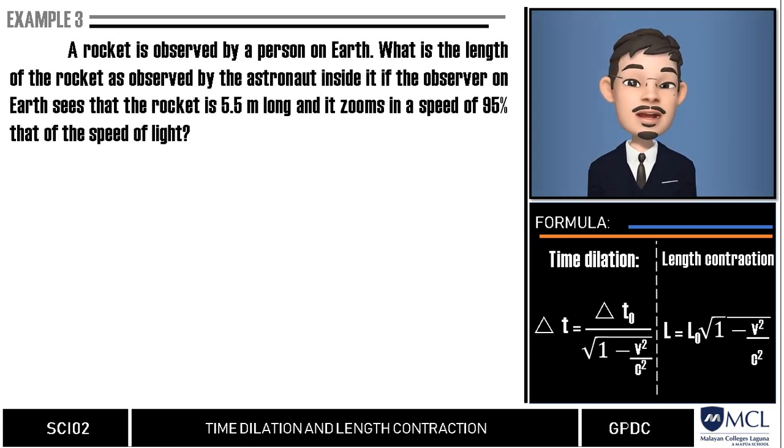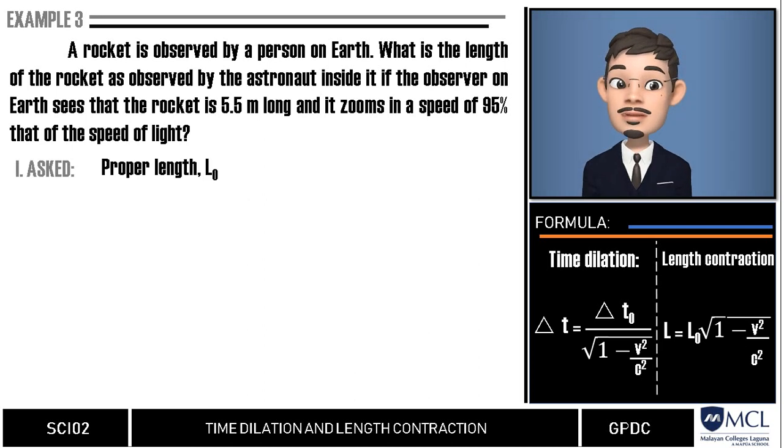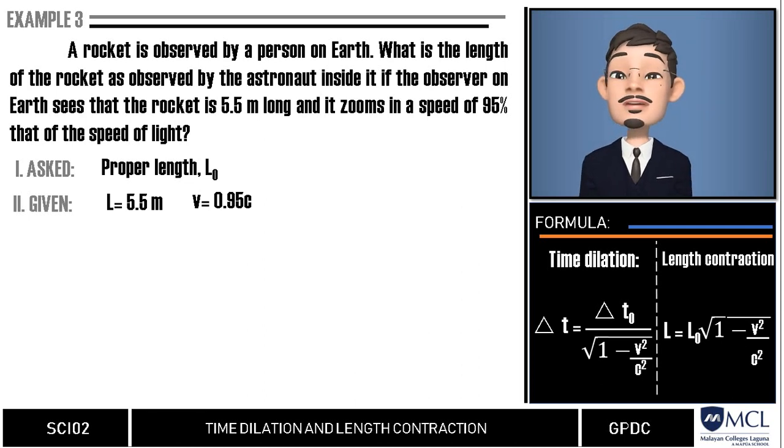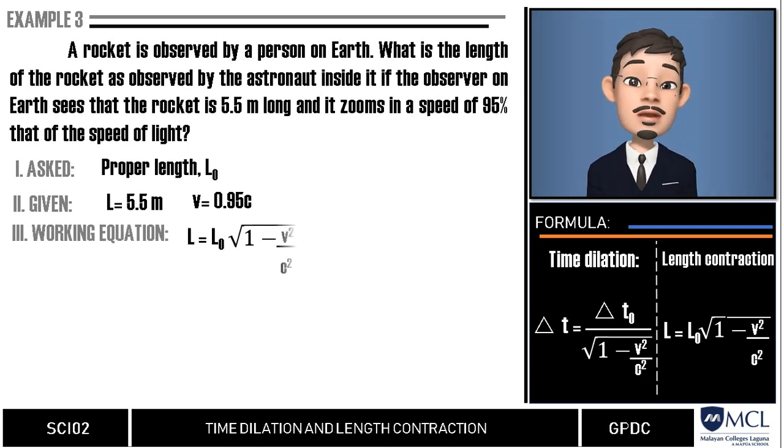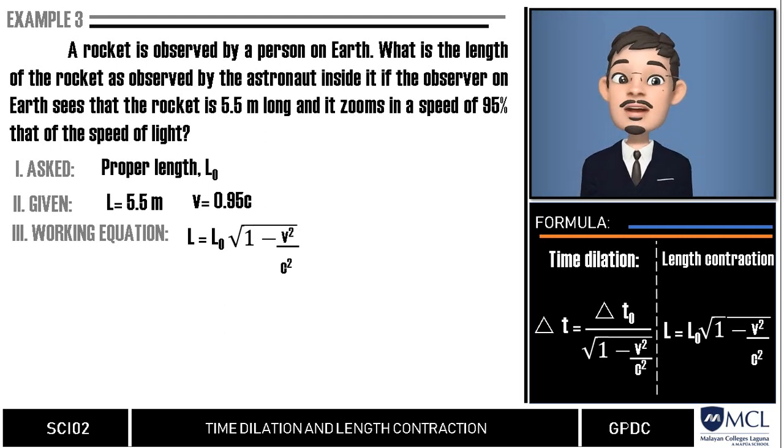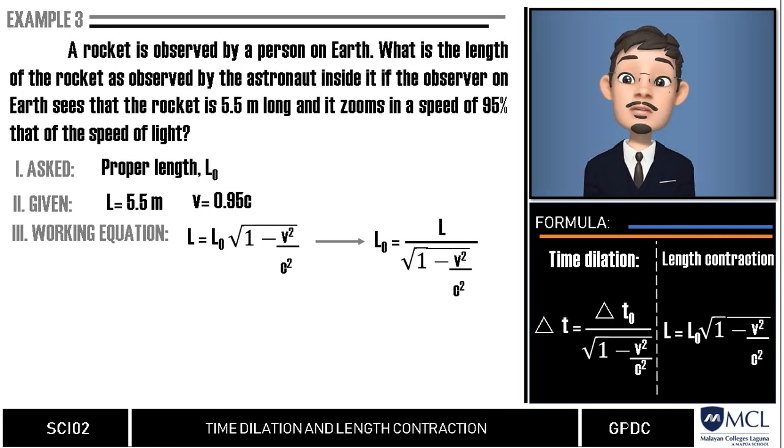What is asked in the problem is the proper length, which we represent as letter L sub 0 of the rocket observed by the astronaut inside it. Next, the relative length and the speed of the traveler as measured by the percentage of the speed of light are given. From our original formula, L is equal to L sub 0 multiplied by Lorentz constant, we can manipulate this as L sub 0 is equal to L over square root of 1 minus v squared over c squared.